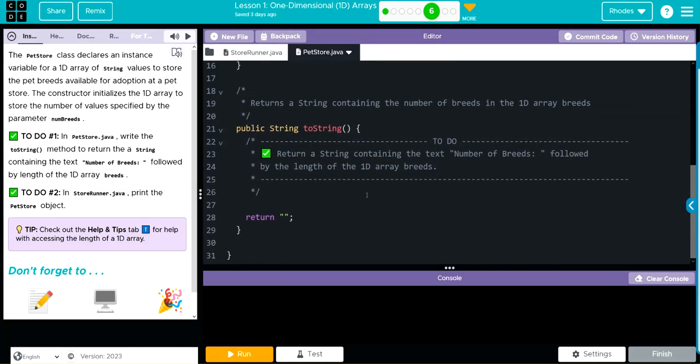We have our toString method, which we're going to use to return the length of our array. toString was one of our last lessons in the last unit. It enables us to return our object with actual useful information instead of just a location where the object is stored. We need to do number of breeds, and it has to be exact if you want to pass the test.